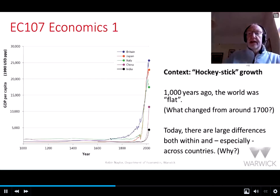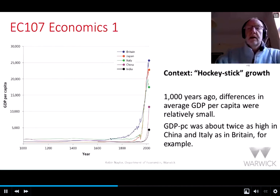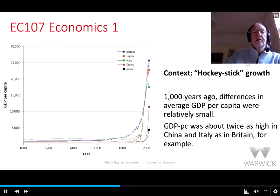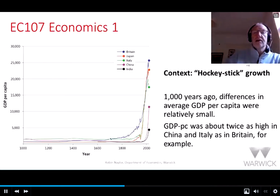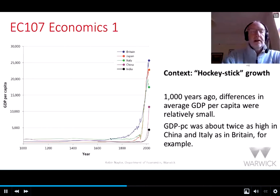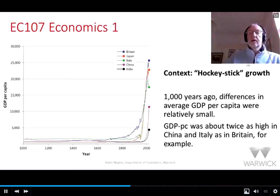Today, there are large differences both within and especially across countries, and we'll be asking why. A thousand years ago, differences in average GDP per capita were relatively small. For example, looking at Italy and China, GDP per capita was around 2,000, whilst for other countries in this list the level was lower at about 1,000. So China and Italy were approximately twice as well off as Britain in terms of GDP per capita. But in the current time, those differences are much greater — the differences between countries have grown considerably compared to 1,000 years ago. By 2020, differences across countries are much greater; GDP per capita in Britain was about six times that of India and twice that of China by around the year 2000.